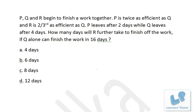Now friends, let's solve this problem, a problem based on time and work. P, Q and R begin to finish a work together. P is twice as efficient as Q and R is two-thirds as efficient as Q. P leaves after two days while Q leaves after four days. How many days will R further take to finish off the work if Q alone can finish the work in 16 days?